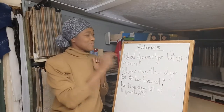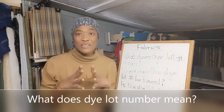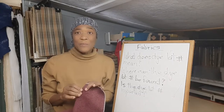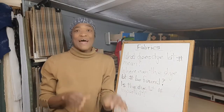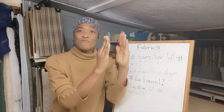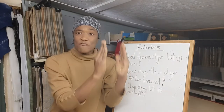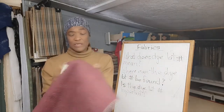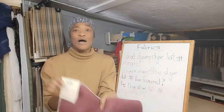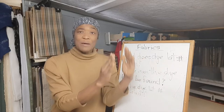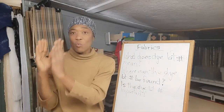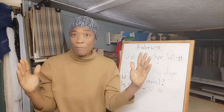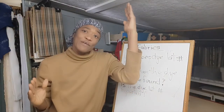The first question is: what does dye lot number mean? Basically, dye lot numbers are numbers that are generated and assigned to a batch of fabrics that have been dyed in the same vat at the same time. If you have vat number one with wild berry being dyed and vat number two with wild berry being dyed, they will have two different dye lot numbers because they are in two different vats.